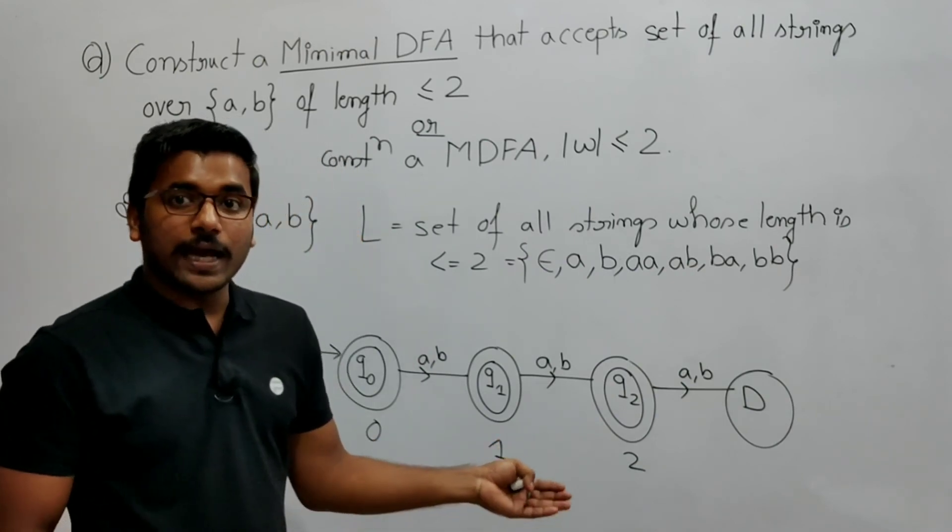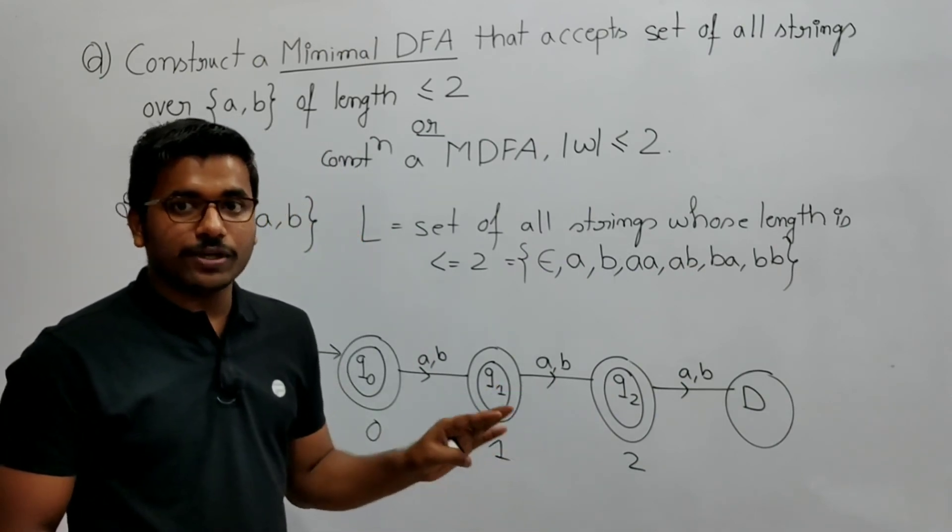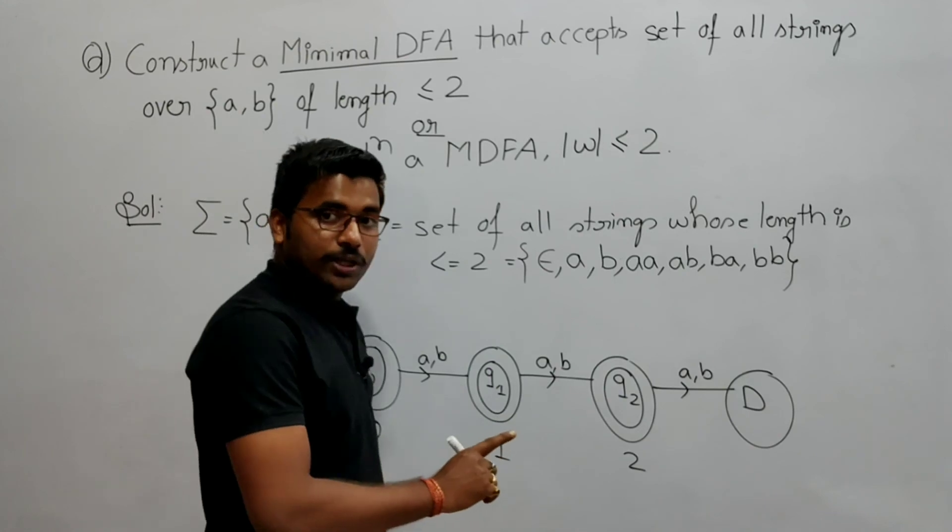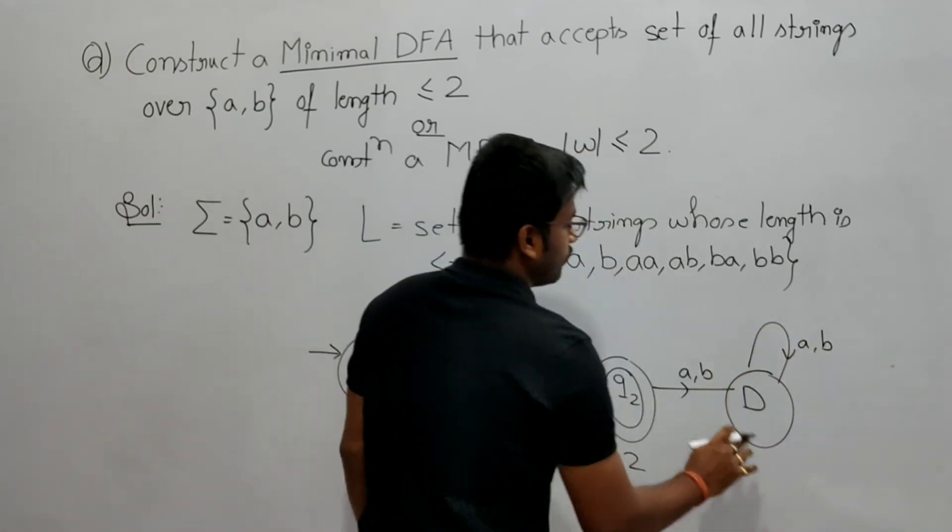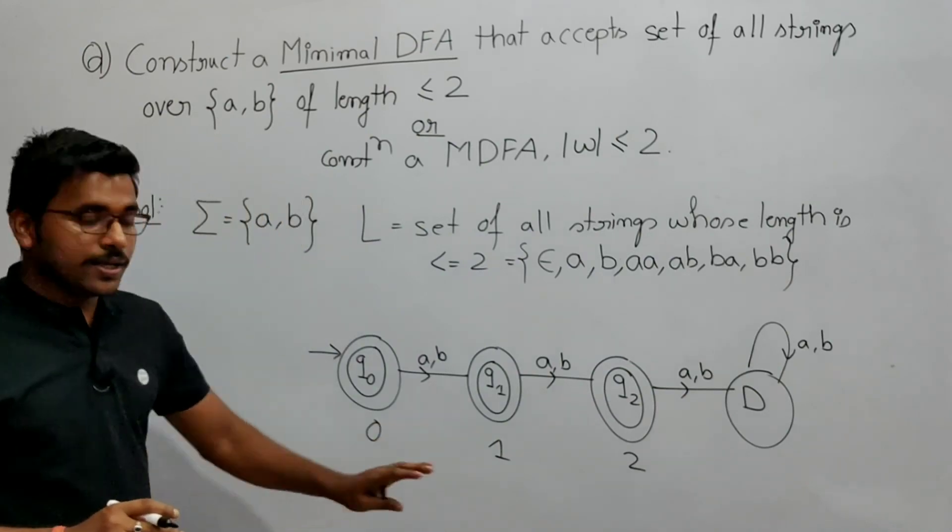Now again dead state, I need to give transition for every state, for every input alphabet. So dead state by getting either a or b, it should leave in the dead state itself.